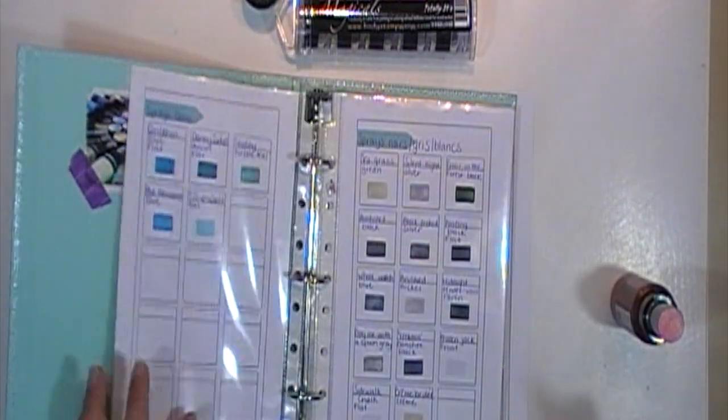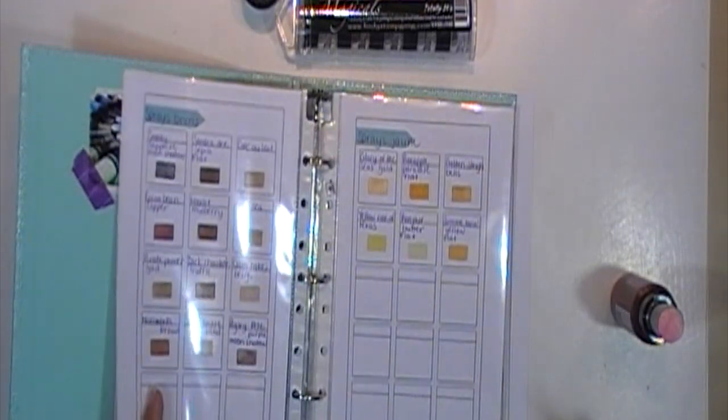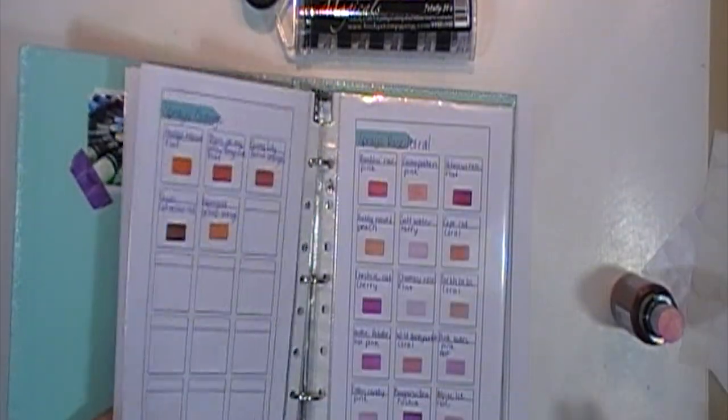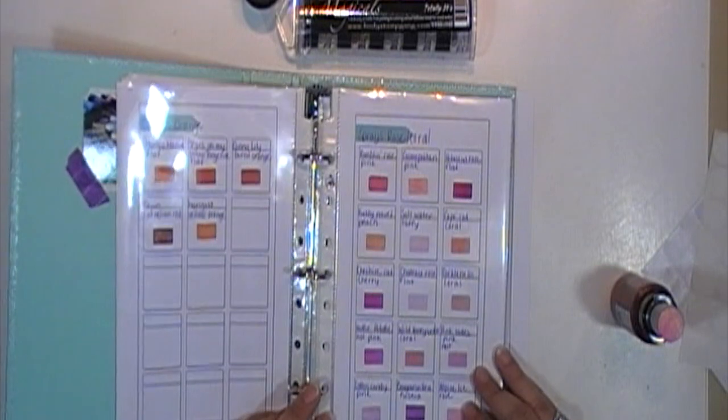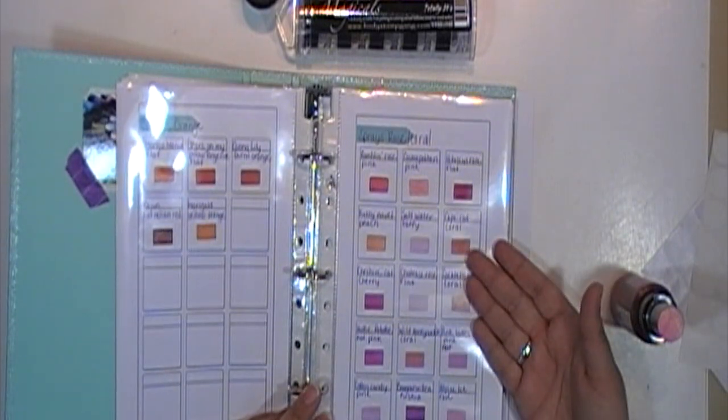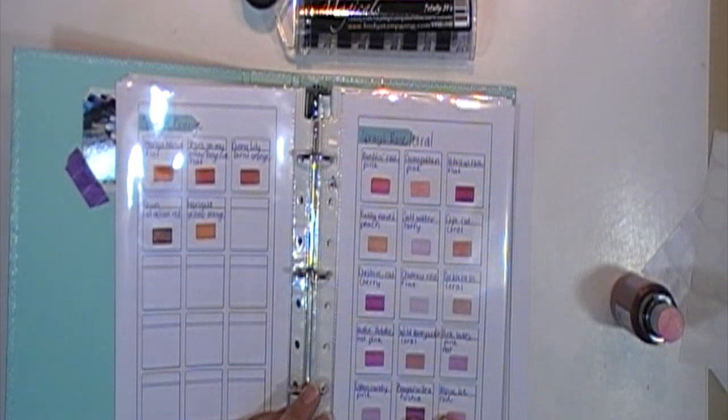For example, when I need a pink, I take my color chart and at a glance, I see all the shades I can use. It's easy then to choose the right one to fit with my projects.